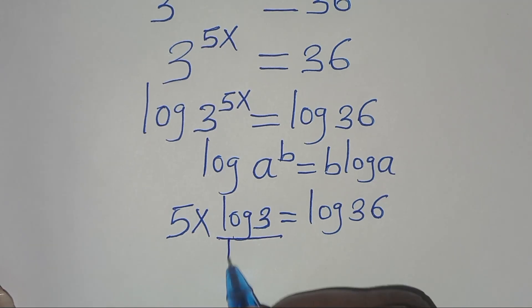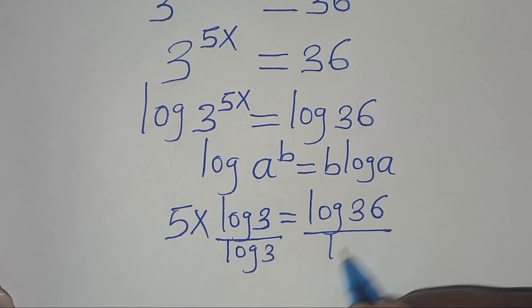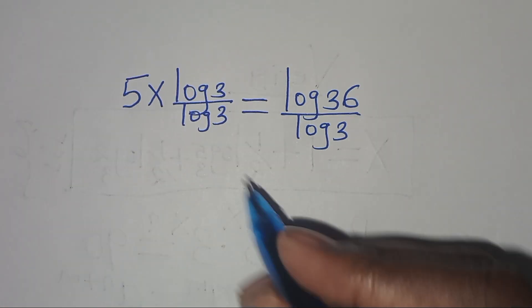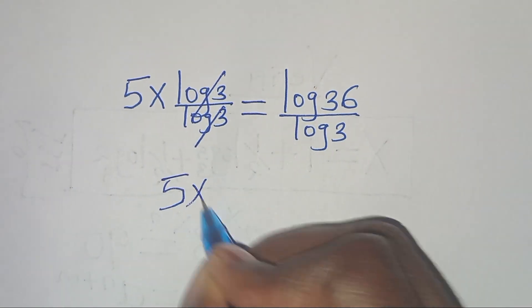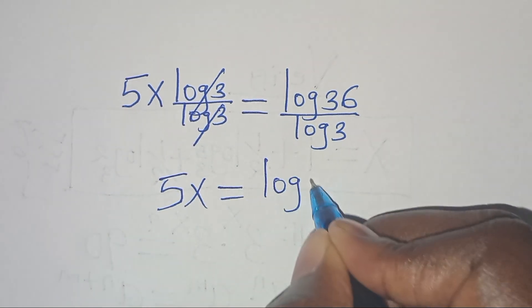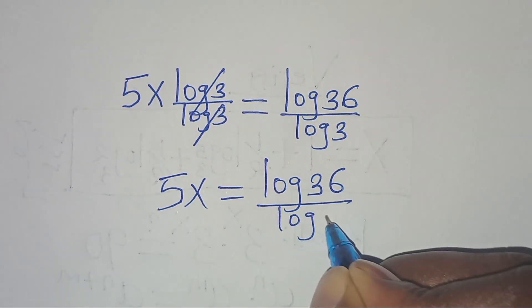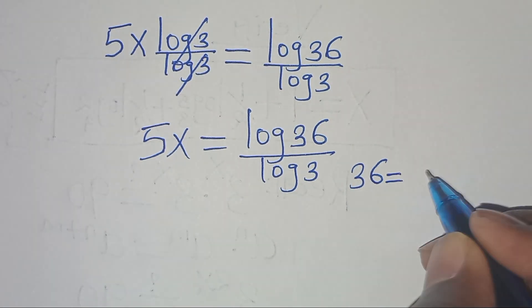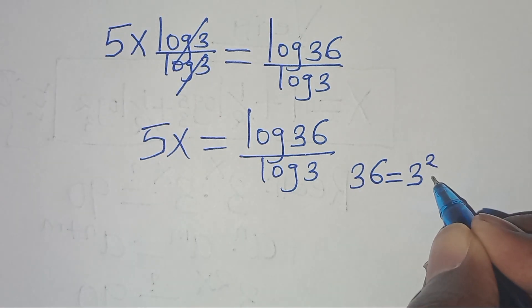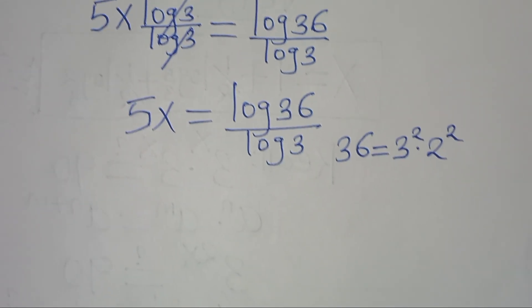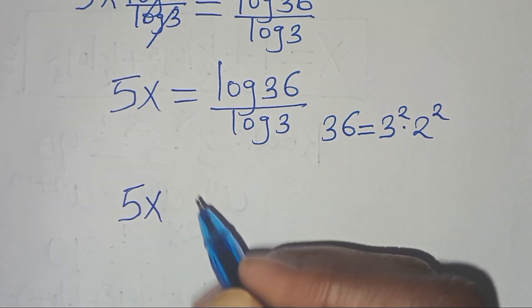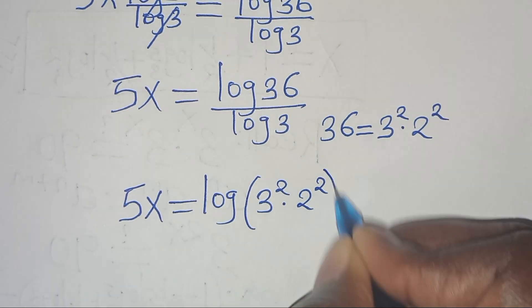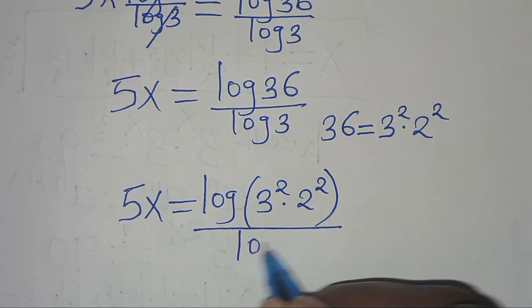The next step is to divide both sides by log(3), so 5x equals log(36) divided by log(3). We can express 36 as 3 squared times 2 squared, and substitute: 5x equals log(3² × 2²) divided by log(3).